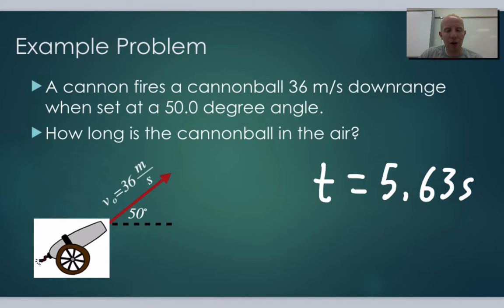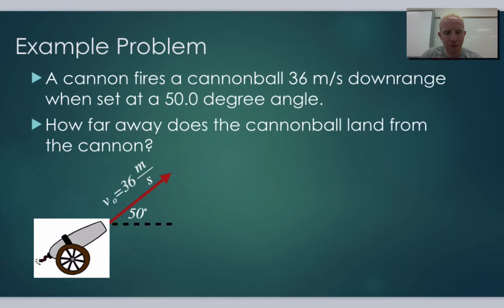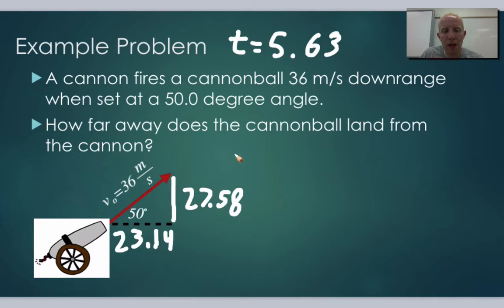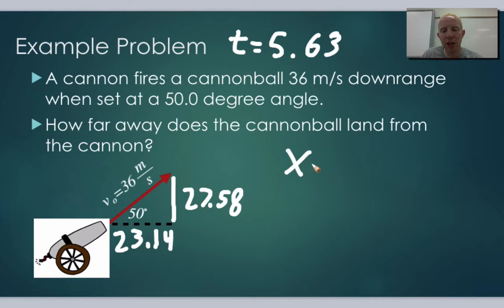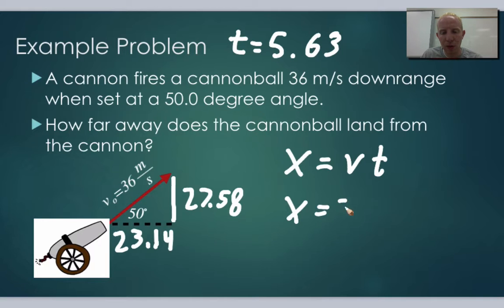The next part of the problem asks: how far away does the cannonball land from the cannon? To solve this, we plug in the time we just found. The equation is x equals v times t, where v is the horizontal velocity of 23.14 meters per second.